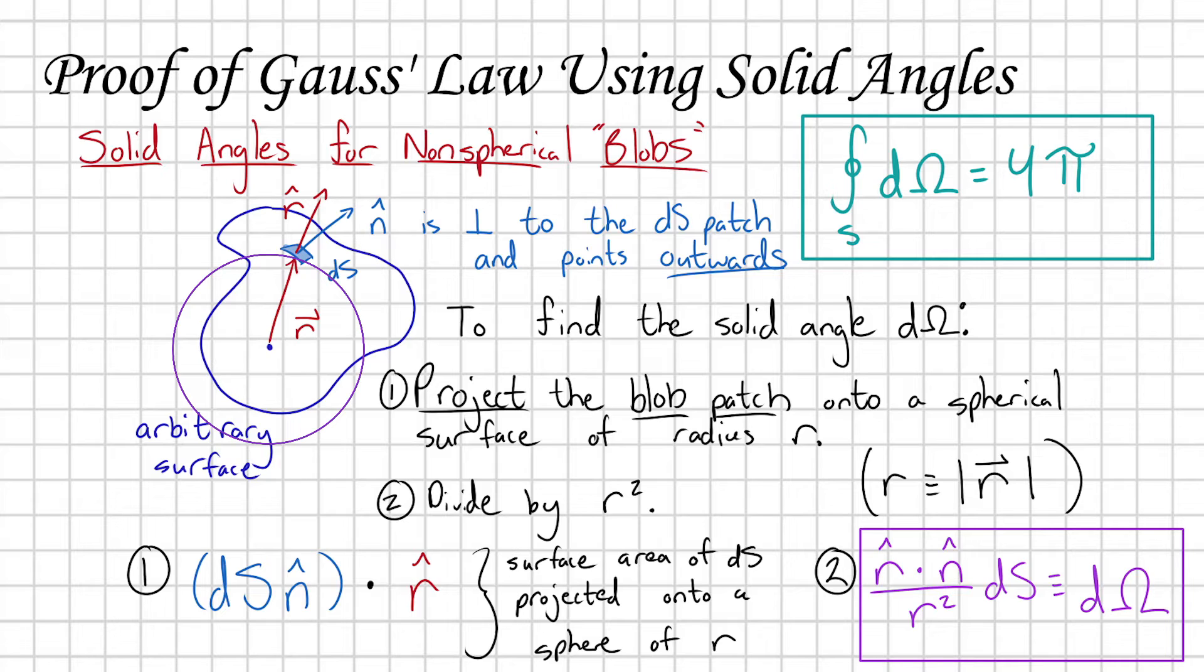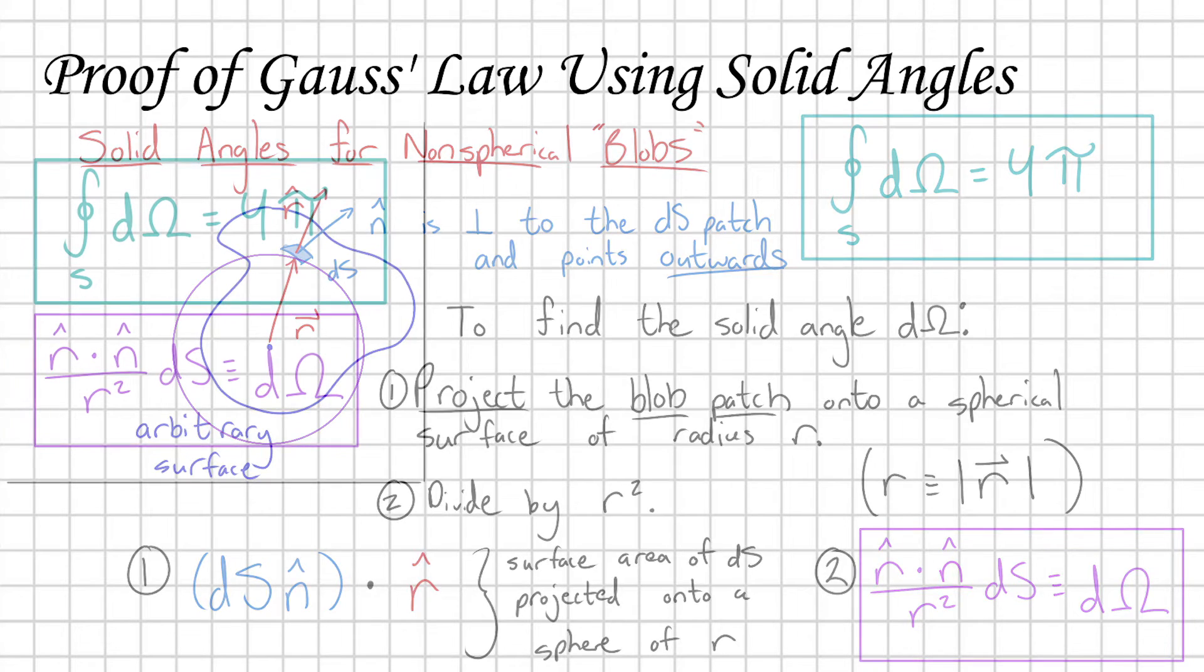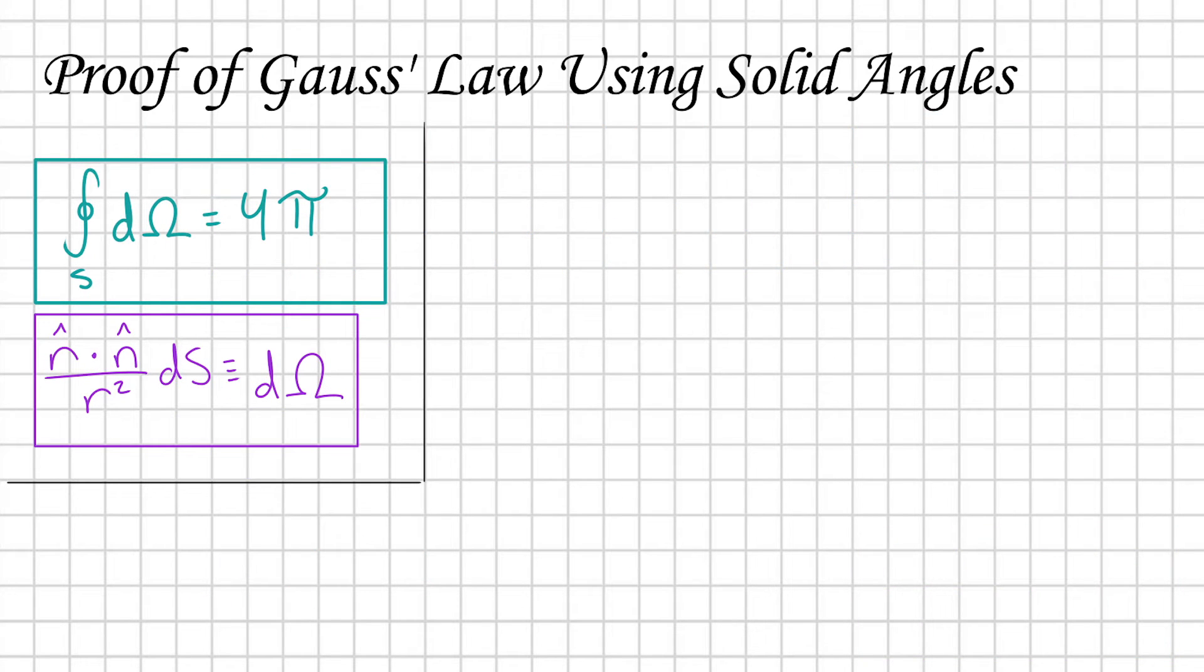This is a natural conclusion, by the way. It's just like how with angles, we know that a closed loop, regardless of its shape, is going to subtend an angle of 2π. Now we've shown a similar result for our solid angles. If we're feeling great about these two results, then proving Gauss's law is super duper easy.